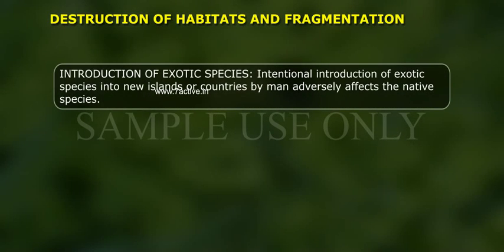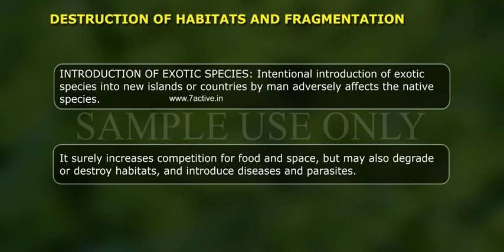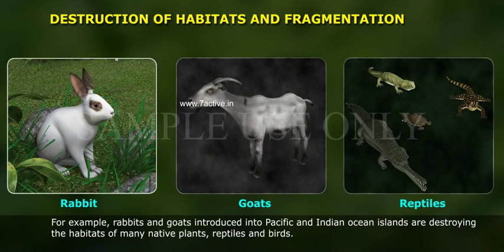Introduction of exotic species: international introduction of exotic species into new islands or countries by humans adversely affects native species. It increases competition for food and space, but may also degrade or destroy habitats and introduce diseases and parasites. For example, rabbits and goats introduced in Pacific and Indian Ocean islands are destroying the habitats of many native plants, reptiles, and birds.